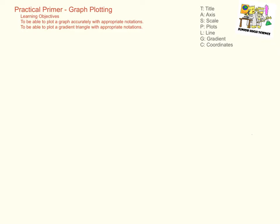The first one is title. Title is quite self-explanatory. We need to write down the title of the graph. For example, a title can be graph of acceleration with the units separated by a slash against mass. So this is an example of a title.